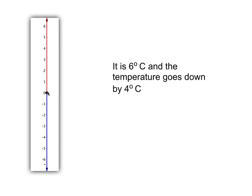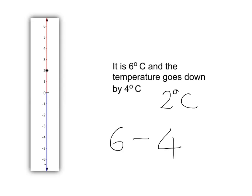Let's have a look at another one. In this case we are at 6, and our temperature comes down by 4 degrees centigrade. We need to start at 6 degrees, and then come down 1, 2, 3, 4 degrees, and we will end up at 2 degrees centigrade. We can summarise this by saying we started at 6, came down by 4, and ended up at 2.